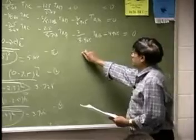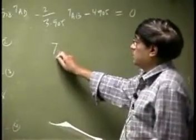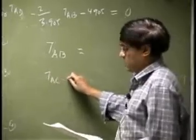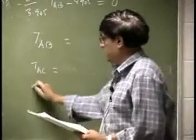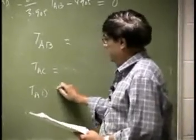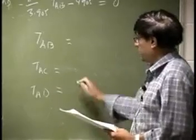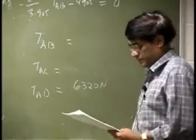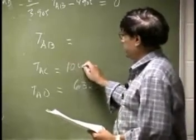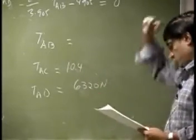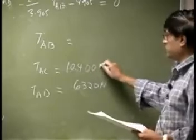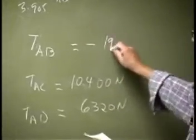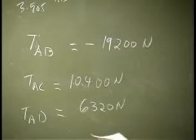Now if you go through the solution, you will have TAB, you will have TAC and you will have TAD. This one comes out to be 6,320 Newton. This one comes out to be 10,400 Newton. This one comes out to be negative 19,200 Newton.